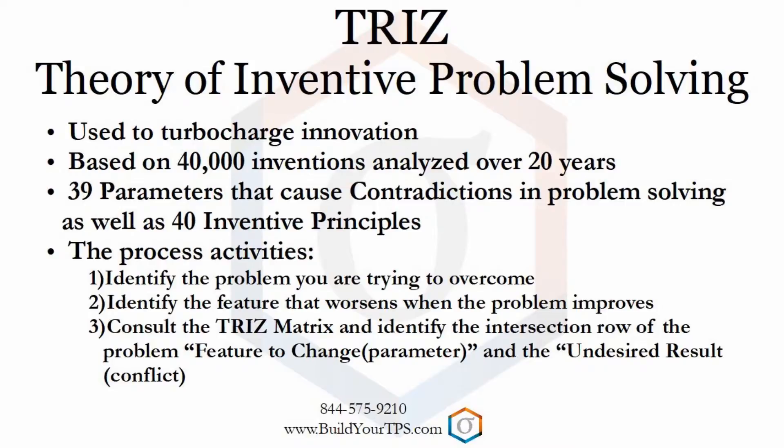TRIZ is based on 40,000 inventions, which led to 39 features or parameters. The contradictions in these parameters were solved by identifying 40 inventive principles. The process is relatively straightforward: identify the problem or challenge, identify the contradiction or parameter that worsens as you try to improve your challenge, and consult the TRIZ matrix for the inventive principles that guided previous inventors to solve the same problem.